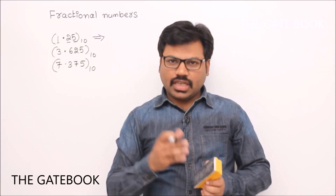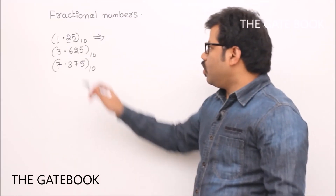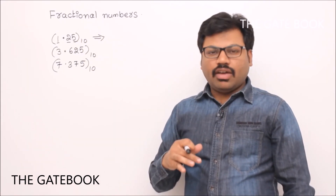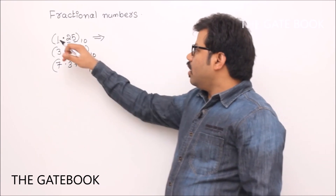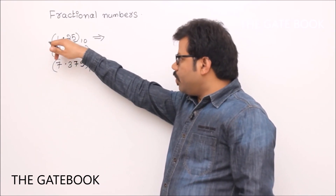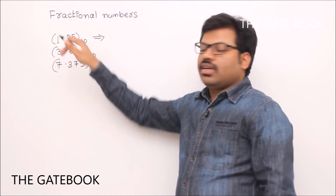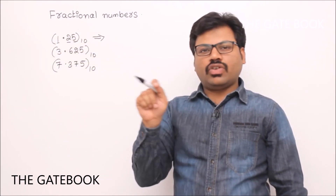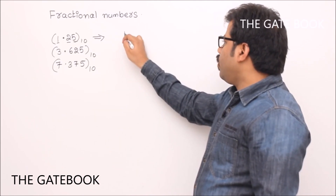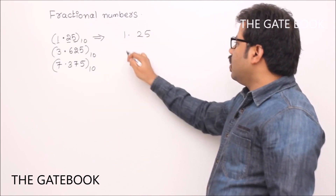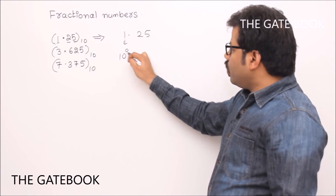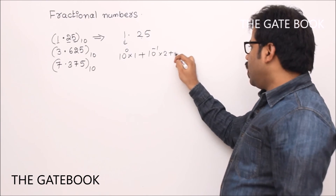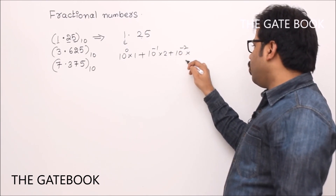We will see how to convert fractional numbers which are in decimal to binary. For example, you have 1.25 base 10. Before that, one important fact: when you have digits at the right side of the point, they also have weightages like 10 power minus 1, 10 power minus 2, and so on. That means 1.25 can be written as 10 to the power of 0 into 1, plus 10 to the power of minus 1 into 2, plus 5 with 10 power minus 2 weightage.